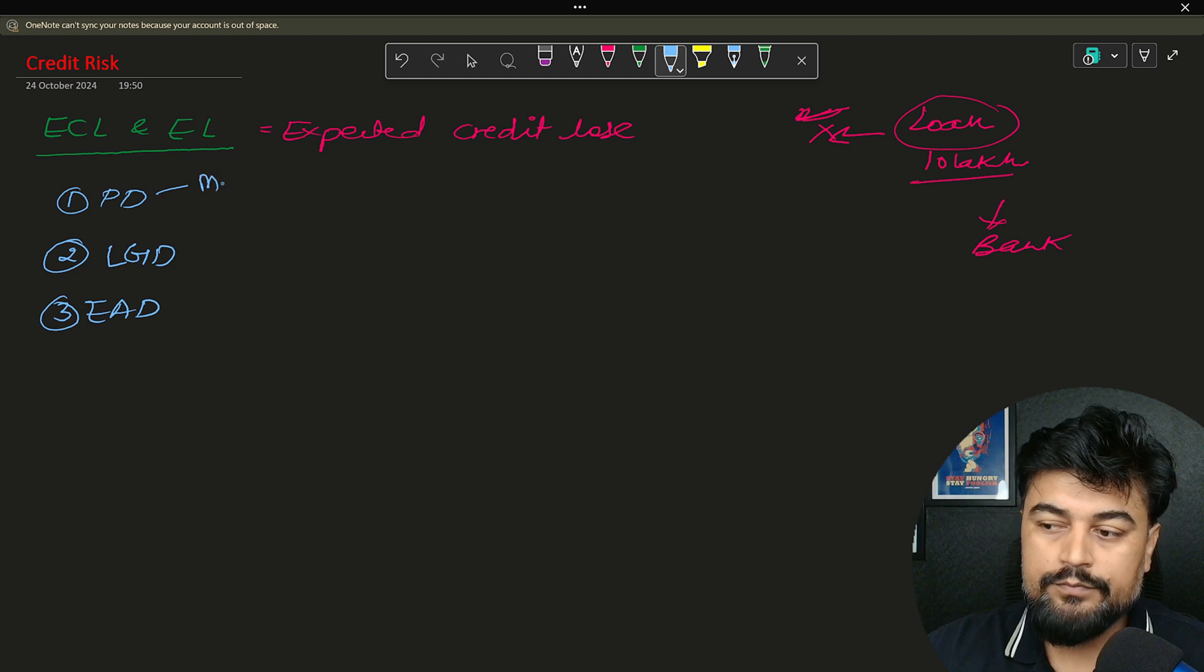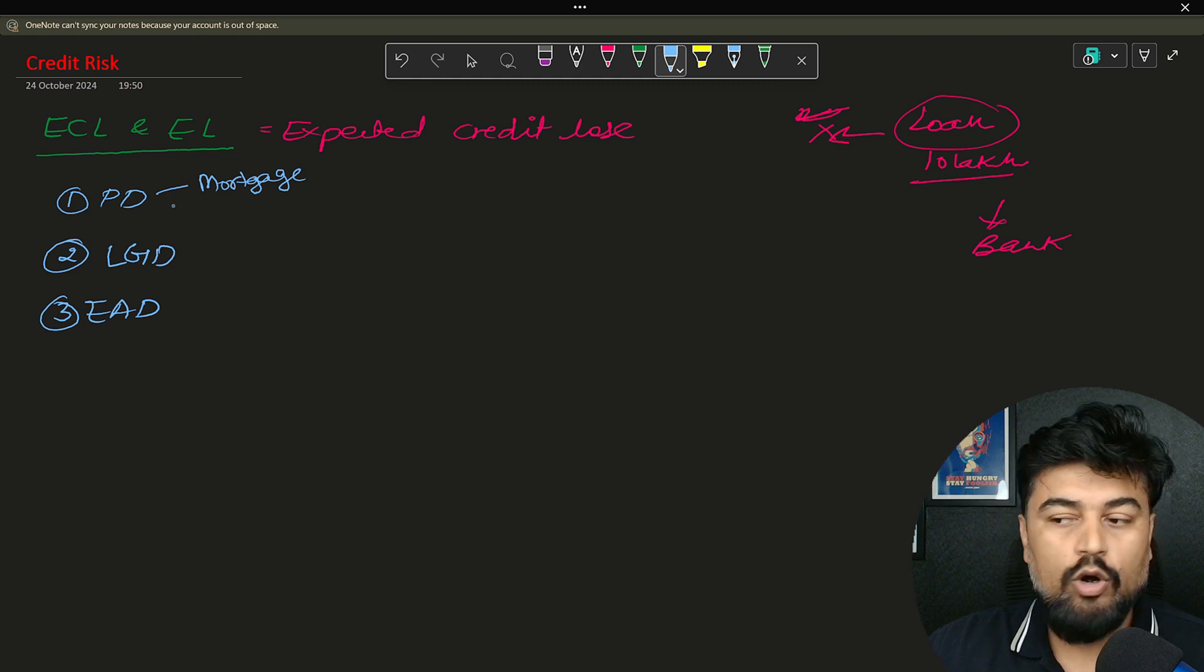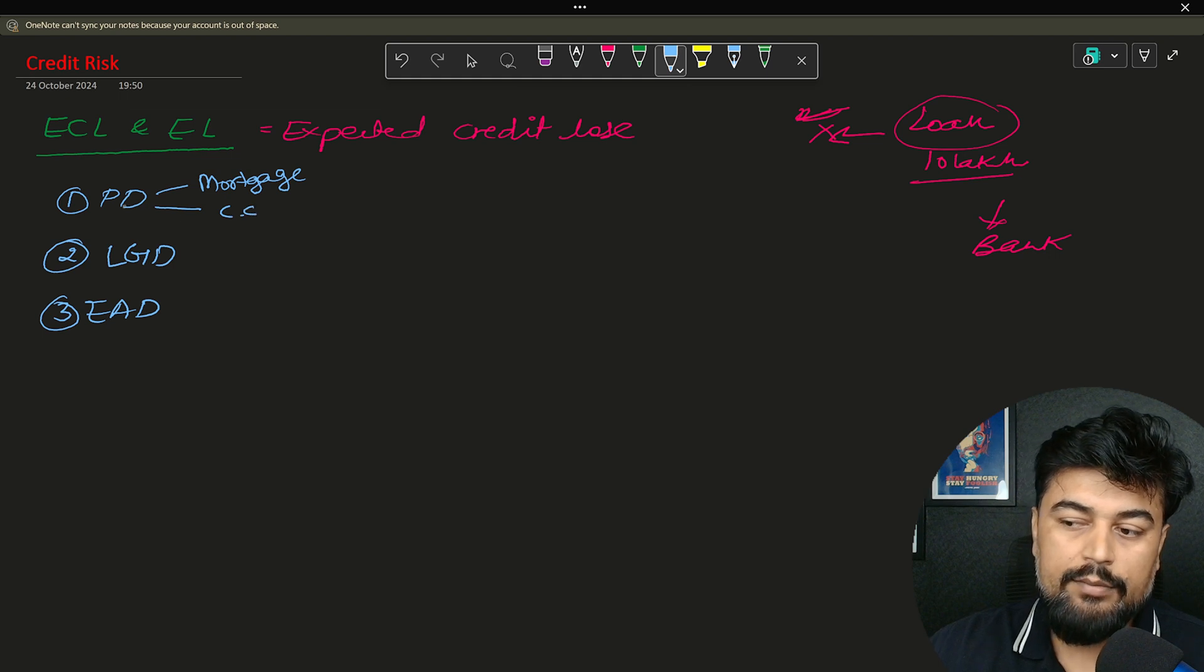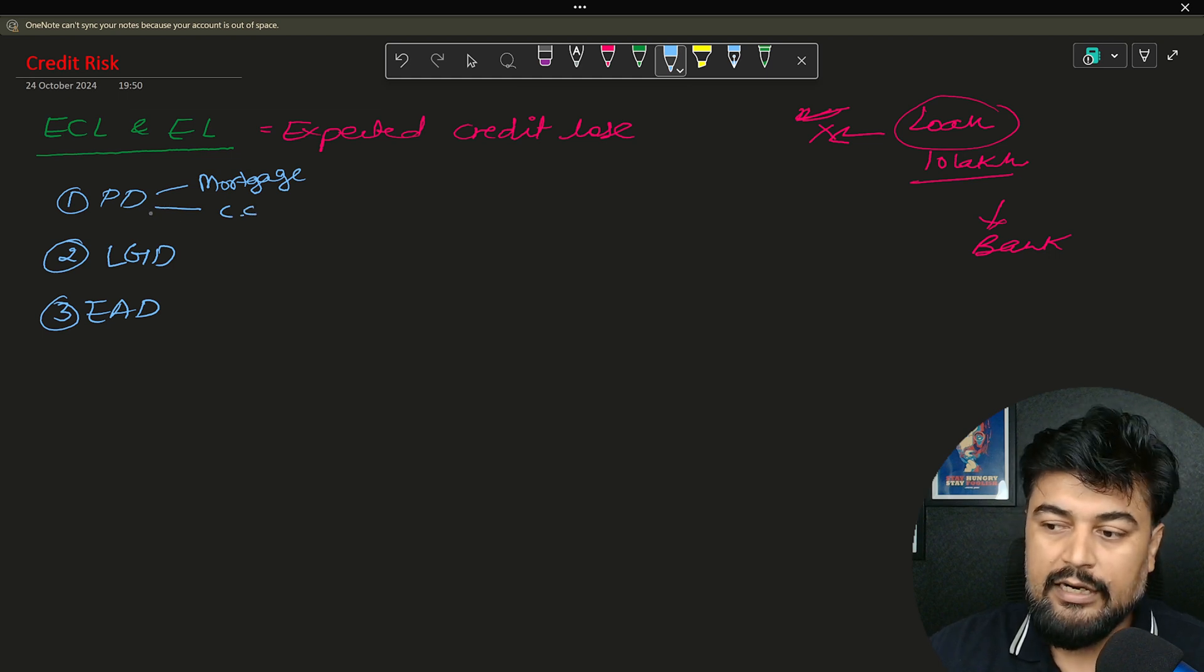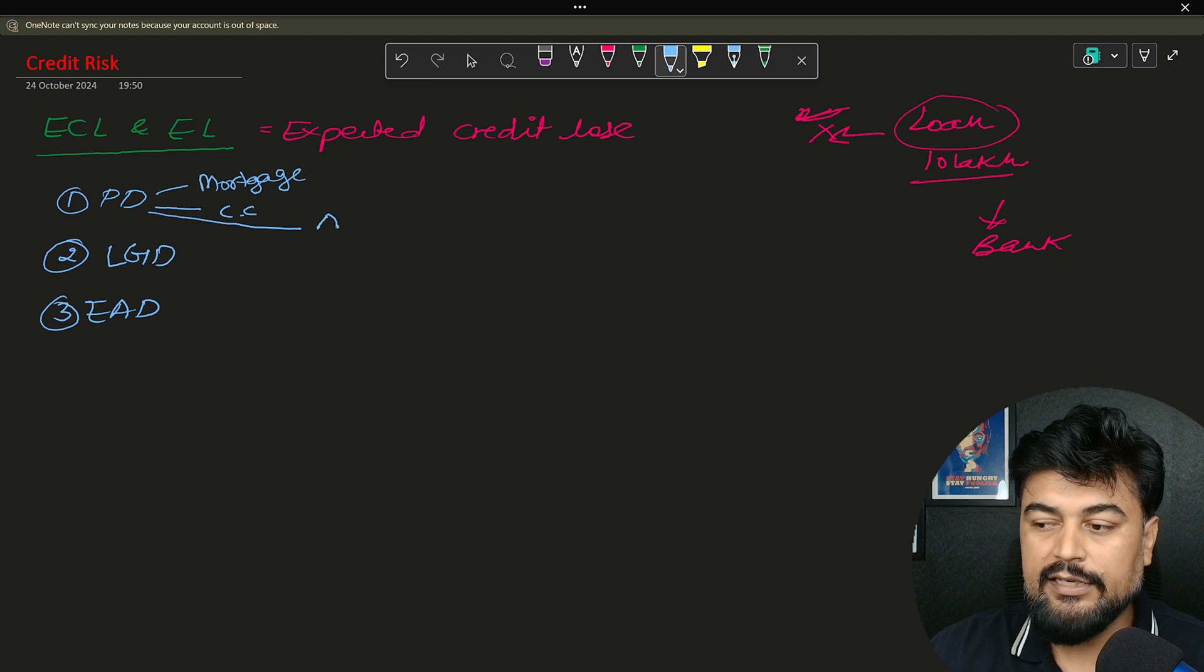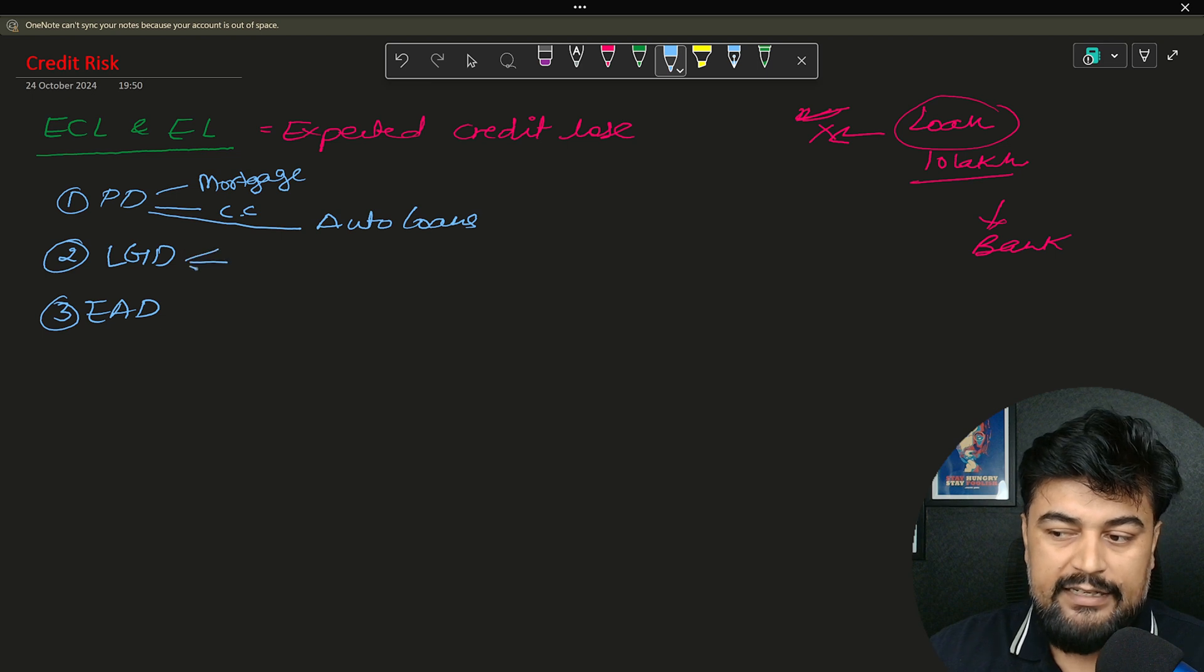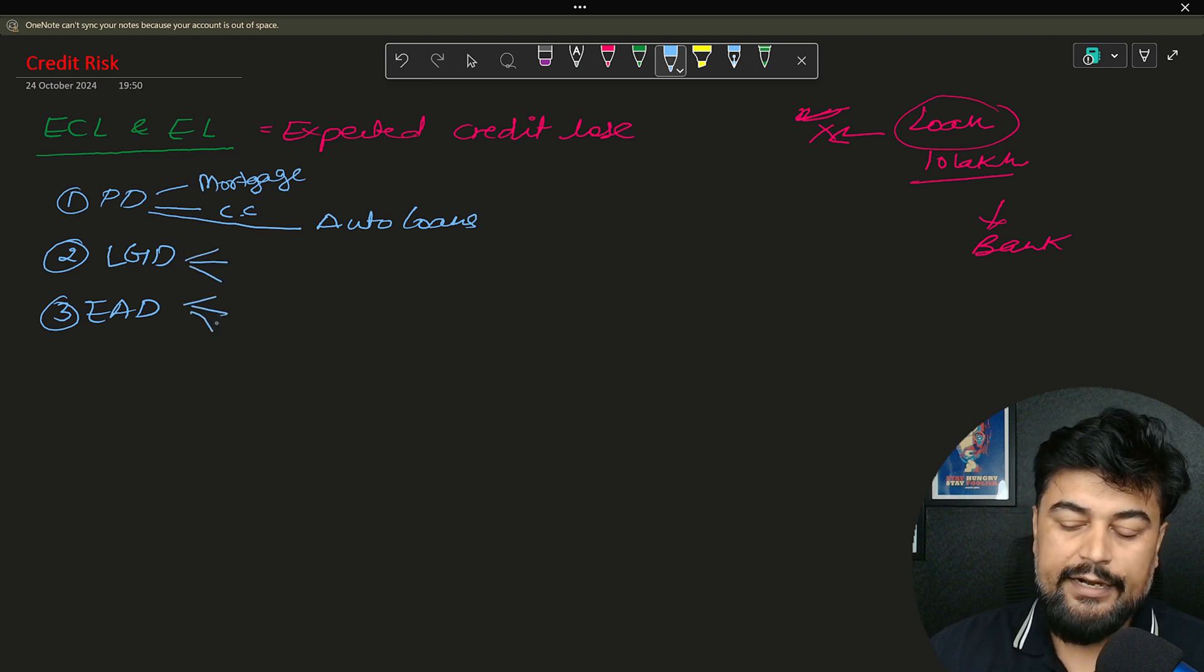Let's say you have a mortgage as a product, so you can make a PD model for mortgage. Let's say if you have a credit card, so you can make a PD model for credit card. Similarly if you have auto loans, you can make a probability of default model for auto loans. Now similarly for LGD also, for EAD also.